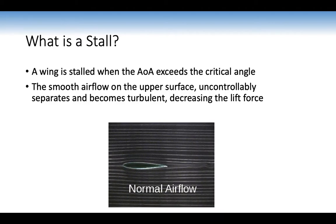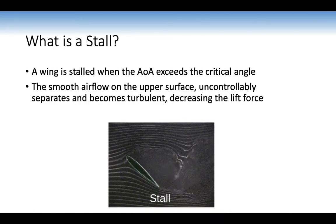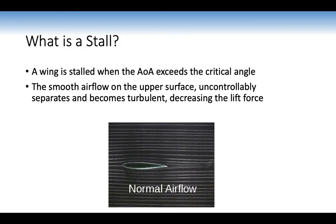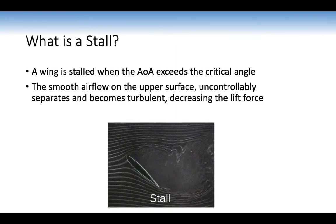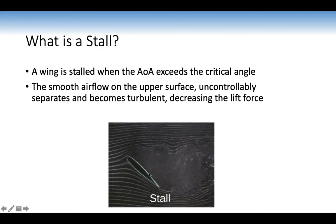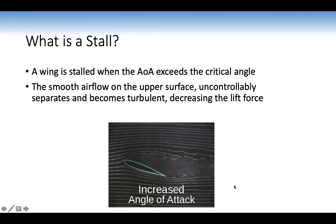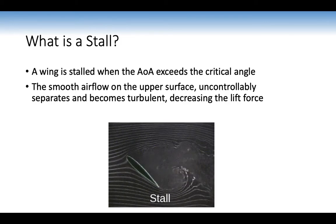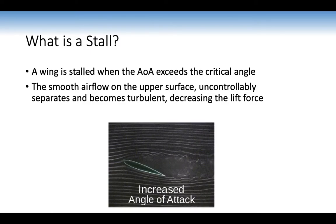A wing stalls when the angle of attack exceeds the critical angle. The wings, which are designed to create lift, no longer create lift. The smooth airflow on the upper surface uncontrollably separates and becomes turbulent, decreasing the lift force. As you can see in this animation, the airflow has completely separated over the wing and the airflow becomes a turbulent wake — which is the stall.